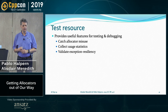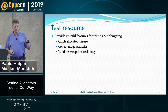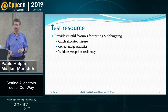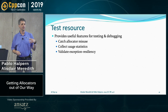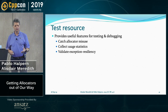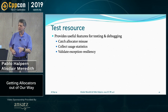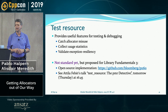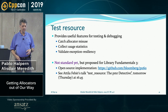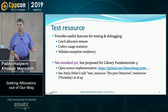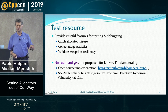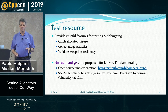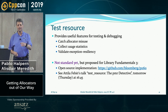I'll mention the test resource, which is for testing and debugging. It collects statistics, can catch allocator misuse such as deallocating something more than once, and provides the ability to do exception testing of your type. This is a great class to use in test drivers. The only downside is it's not in the standard yet — we're working on it, there's a proposal for it, and there's an open source implementation available at the URL shown. I definitely recommend going to Attila's talk tomorrow at 4:45, which is exactly about this test allocator.